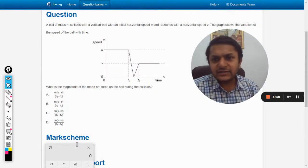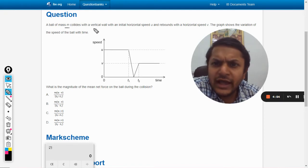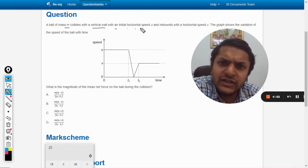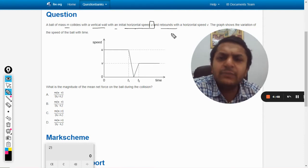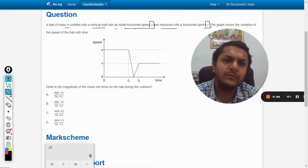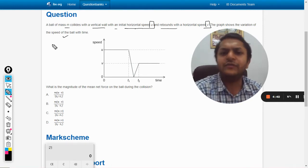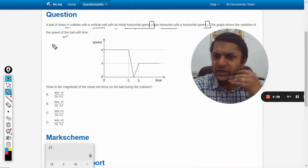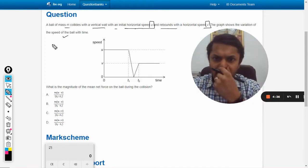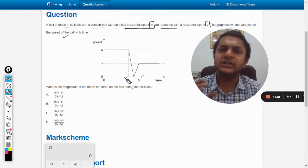Okay dear students, let us see this question. It seems to be interesting. A ball of mass m collides with a vertical wall with an initial horizontal speed u and rebounds with a horizontal speed of v. The graph shows the variation of the speed of the ball with respect to time. At time t1 the collision started, at time t2 the collision has ended.